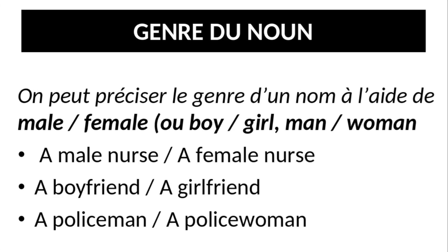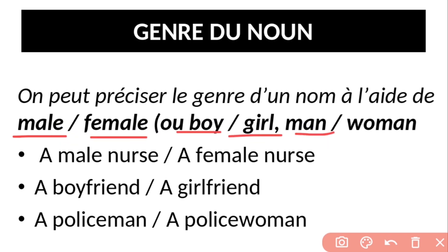On peut préciser les genres des noms à l'aide de : male (mâle), female (femelle), boy (garçon), girl (fille), man (homme), ou woman (femme). Ces mots permettent d'indiquer explicitement le genre d'un nom en anglais.